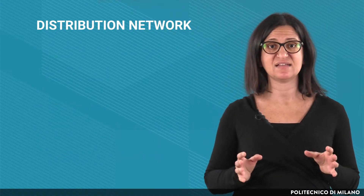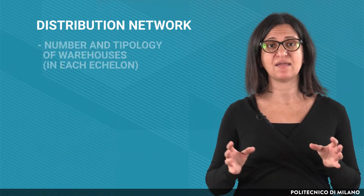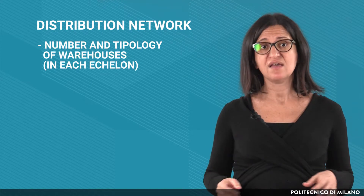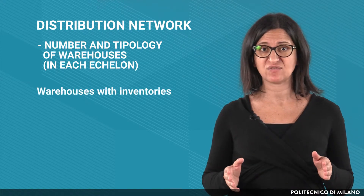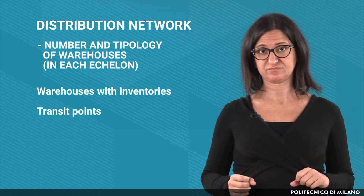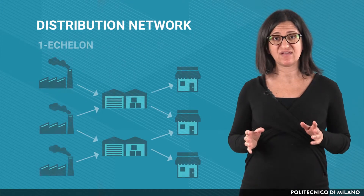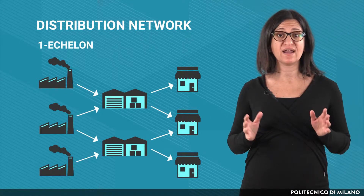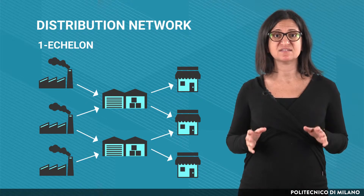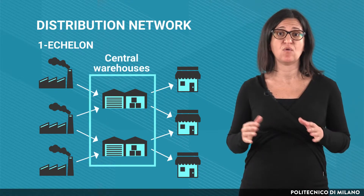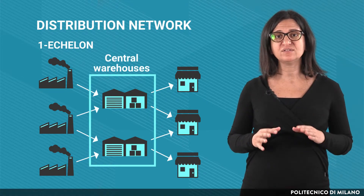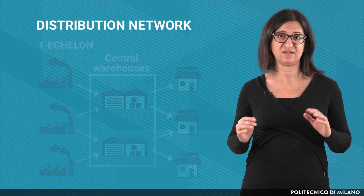Considering the number and typology of warehouses in each echelon, there can be warehouses with inventories or transit points. Let's start by considering the one-echelon distribution network. In this case, the central warehouses — which could be one or more — fulfill all the assignments of the logistic channel.